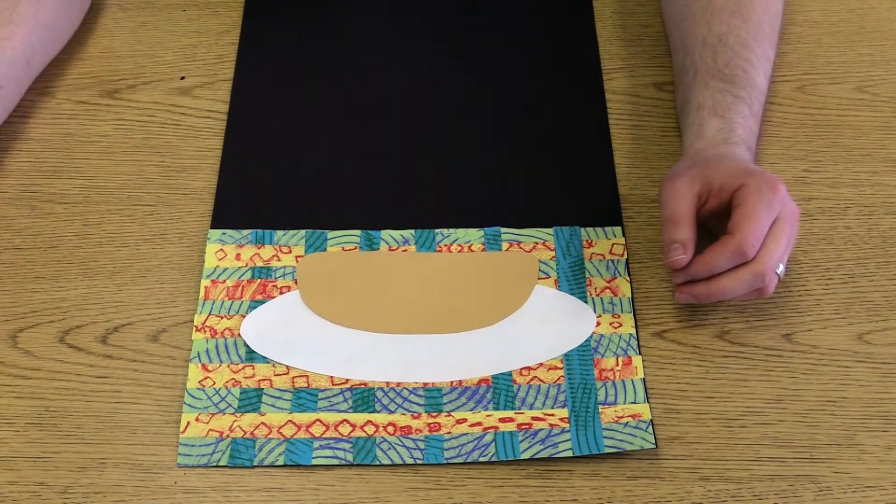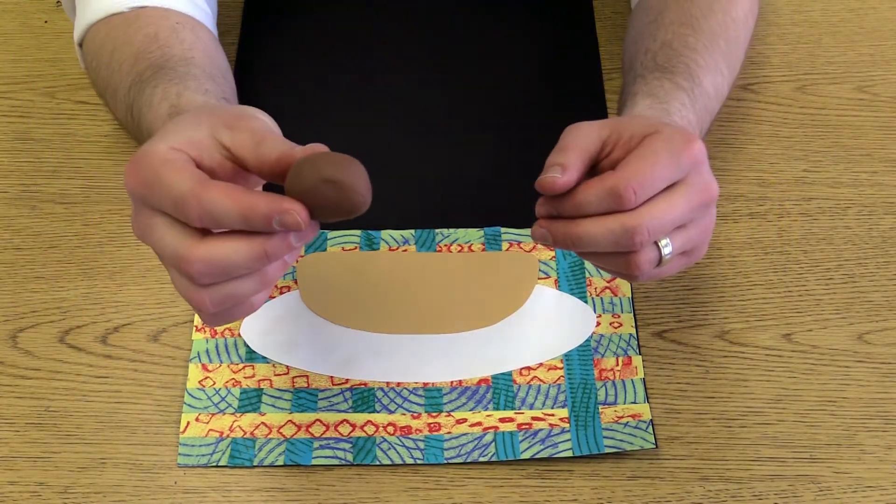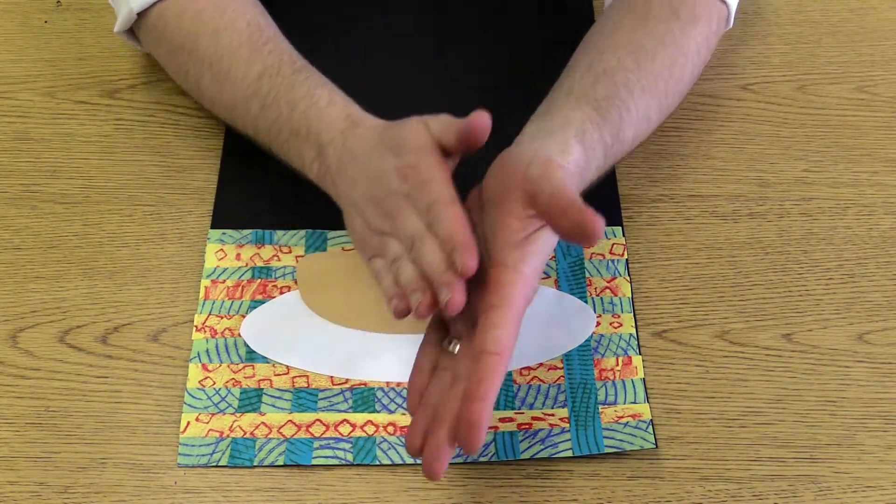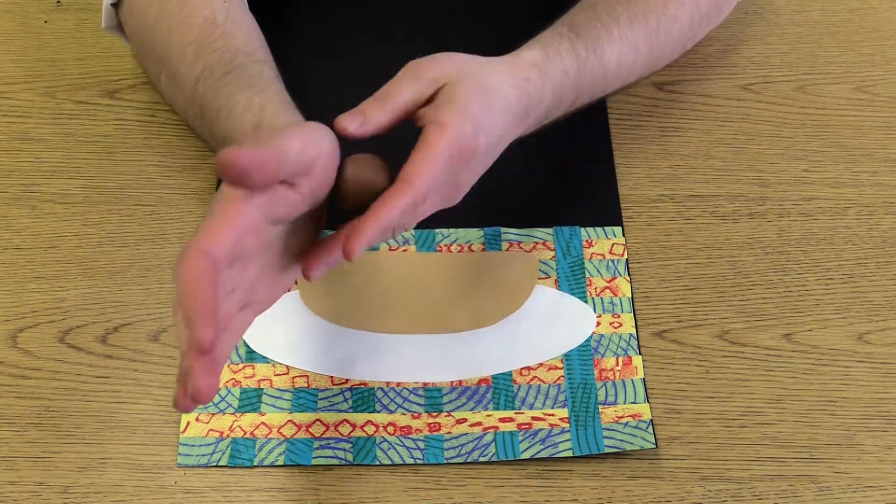Now let's make some meat for our sandwich. So I'm going to give you a little bit of this brown clay. First thing you need to do is roll it up into a ball like this. Just roll it in your hands, get it nice and round.